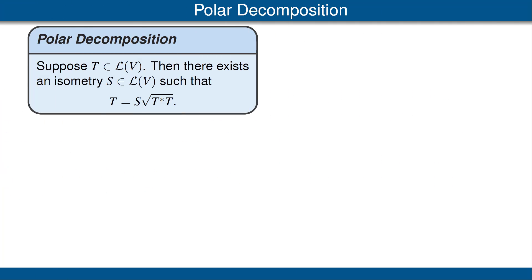Here is the formal statement of the polar decomposition theorem, which we motivated in the last slide. The polar decomposition theorem states that if T is an operator on V, then there exists an isometry S on V such that T is equal to S times the square root of T star T.